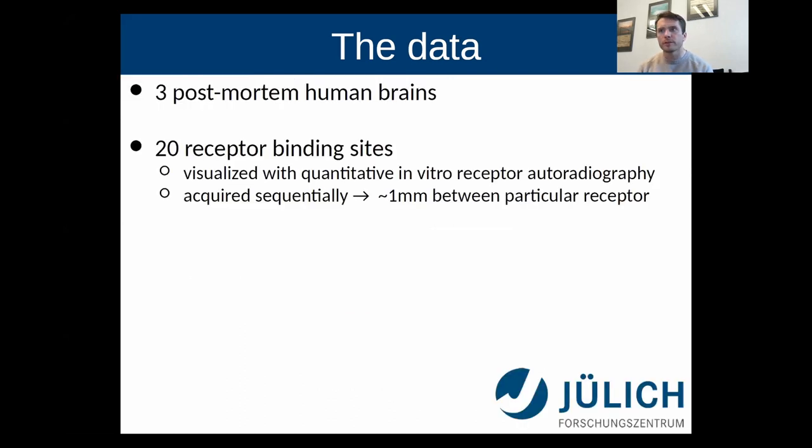There were three human brains that were acquired and 20 different receptor binding sites for each. Something that's important to keep in mind is that these sections are acquired sequentially or serially. So if you have one section, which is for, let's say, AMPA, it's another 20 sections till you get back to that same AMPA section.